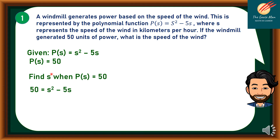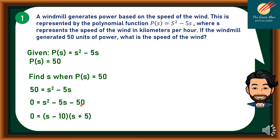We will substitute the value p(s) = 50 into our function. Then we subtract both sides of the equation by 50, so we have 0 = s² − 5s − 50. Applying the factoring method, we can come up with 0 = (s − 10)(s + 5).